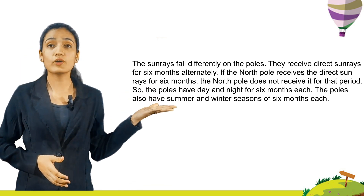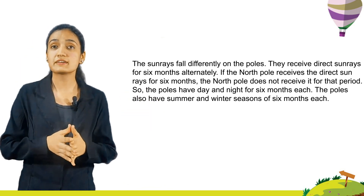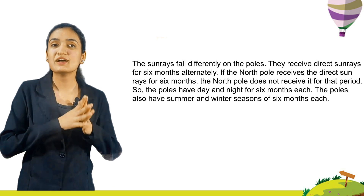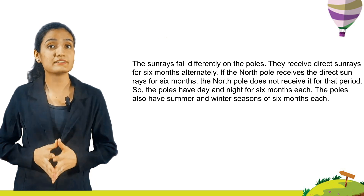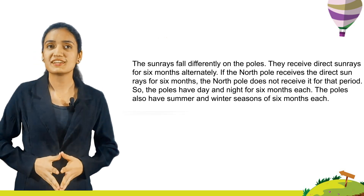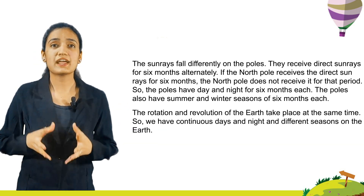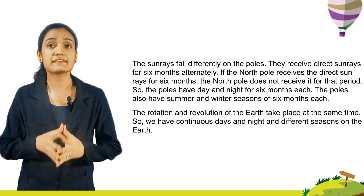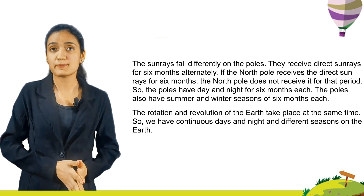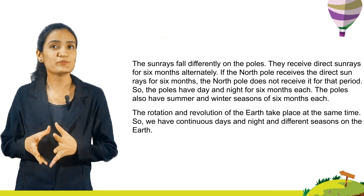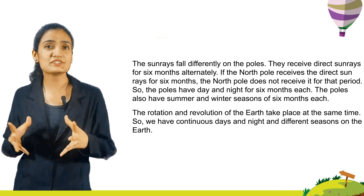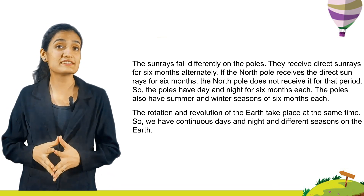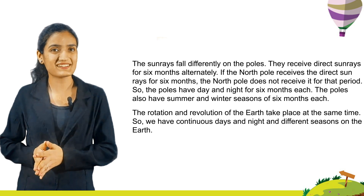The poles also have summer and winter seasons of 6 months each. The rotation and revolution of the earth take place at the same time. So we have continuous days and nights and different seasons on the earth.